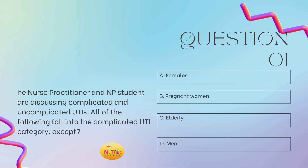So the stem of the question states: all of the following fall into the complicated UTI category, except. Don't forget that keyword — except. So we're looking for what does NOT fall into the complicated UTI category. Is it A, females? B, pregnant women? C, the elderly? Or D, males? So the answer is A, females.